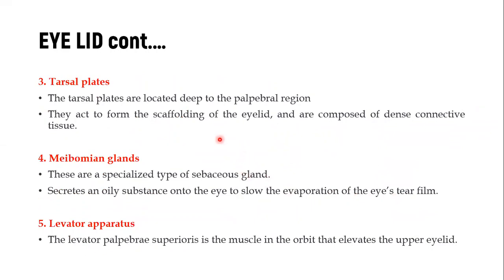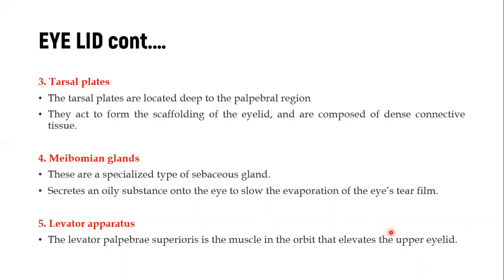We also have the tarsal plate, which gives the eyelid its structure because it is composed of dense connective tissue. Around that area we have the Meibomian gland, also called the tarsal gland. These are very specialized sebaceous glands important for secreting an oily substance onto the eye, slowing evaporation of the tear film and preventing dry eye syndrome. Then we have another muscle called the levator apparatus — specifically the levator palpebrae superioris — which is important for elevating or opening the eyelid, while the orbicularis oculi is responsible for closing it.